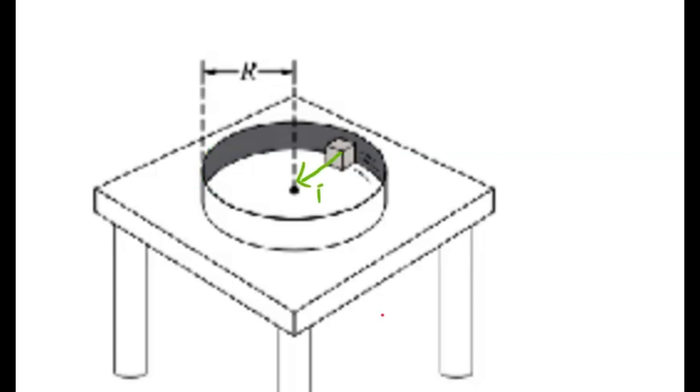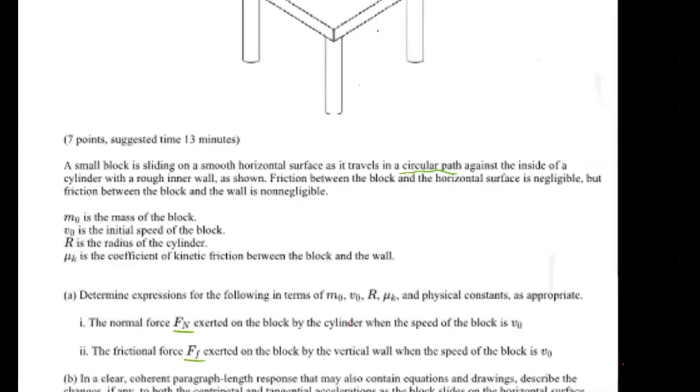Instead, you want to draw it like this. The centripetal force is force normal, right? Because it is the perpendicular force that is pointing away from the surface, and your surface in this case is that vertical wall.